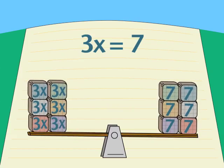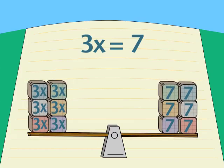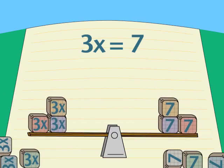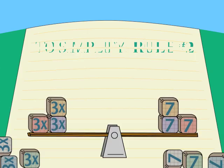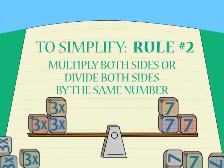Stacking on more copies of the same thing is called multiplying. Stacking fewer is dividing. We can multiply or divide both sides of an equation by the same number without losing our balance.